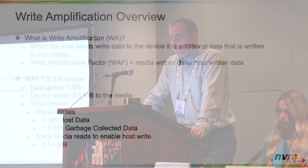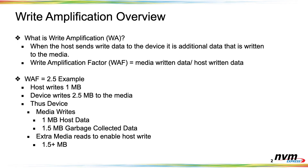For example, if the host writes a megabyte and the device has to write 2.5 megabytes, it's 2.5 divided by 1 — you have a WAF of 2.5. The major source would be garbage collection. That additional 1.5 megabytes of writes results from the drive reading 1.5 megabytes of data that needs to be rewritten somewhere else.